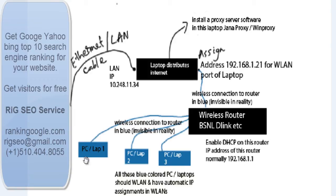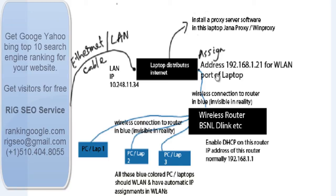This is a wireless connection and all connected devices should have a WLAN port. They should have automatic IP assignment so that they can access the DHCP of this wireless router, and DHCP should be enabled in the router. In the laptop — which you can call the server laptop because it distributes the internet — the WLAN connection should have an assigned IP address on the WLAN port.